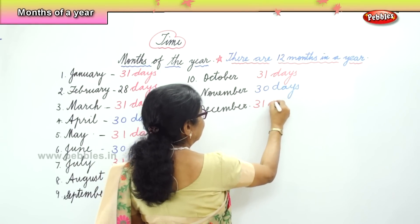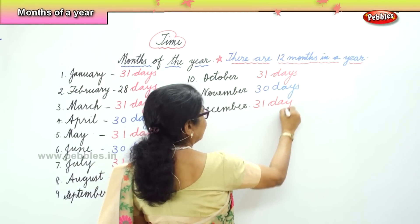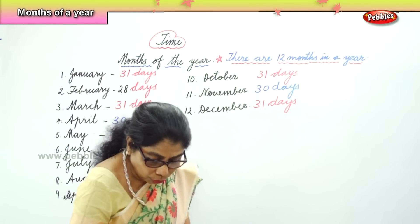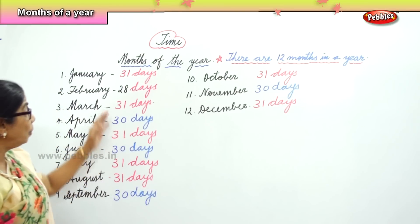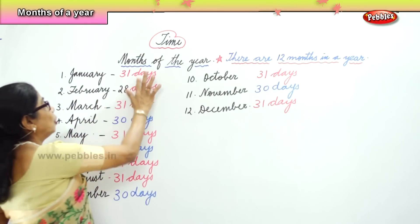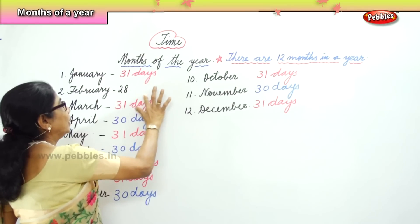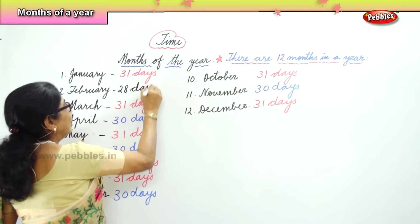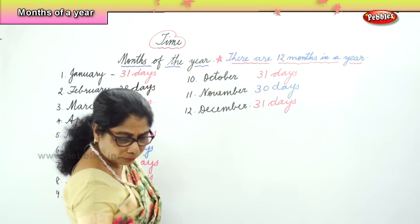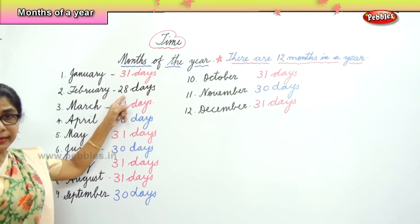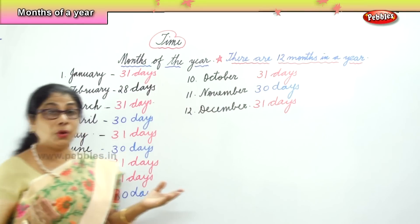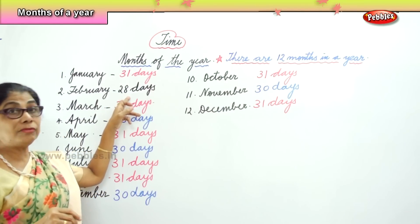October has thirty-one days. And November has thirty days. And December has thirty-one days. So now we learnt not only the spelling but also we need to remember, looking at the calendar, how many days in each of the months. Only February has twenty-eight days, and in the leap year alone, every four years, it will have twenty-nine days.